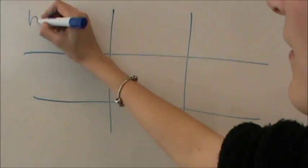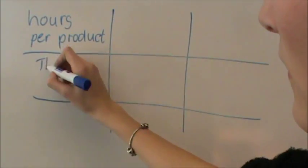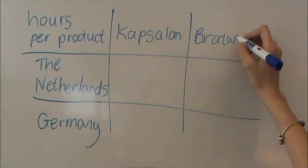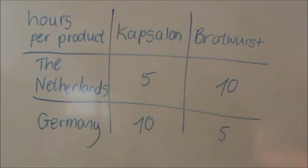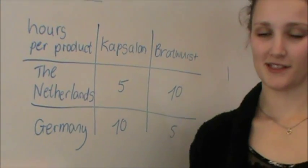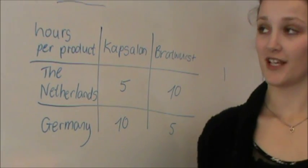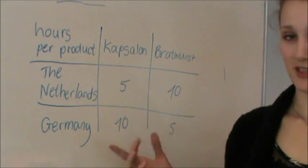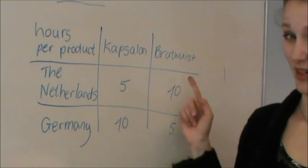First off we will start with the absolute advantage. This is the ability of one country to produce a product more efficiently than another country. We will look at this absolute advantage with a few numbers. This table is a simplified version of the world and it shows how many hours Germany and the Netherlands need to produce these two products: capsulons and bratwurst.